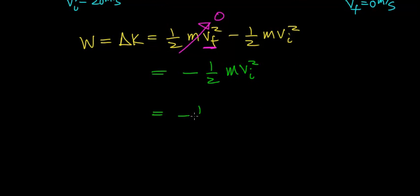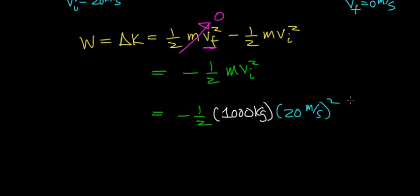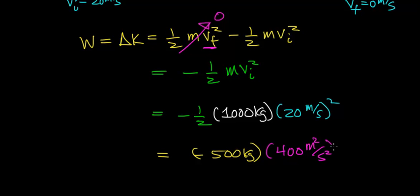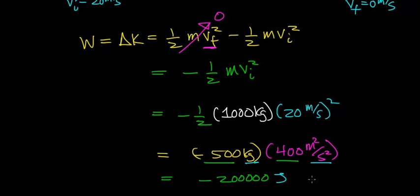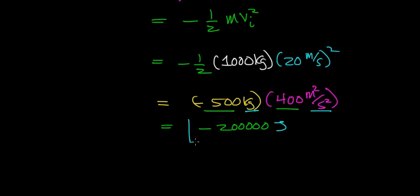Working this out: minus one-half times the mass of the car, which is 1,000 kilograms, times the initial velocity of 20 meters per second squared. Minus one-half of 1,000 kilograms is minus 500 kilograms, and 20 meters per second squared is 400 meters squared per second squared. Multiplying minus 500 by 400 gives minus 200,000 kilograms times meters squared per second squared, which is a unit of joules. So the energy required to bring this car to a stop is minus 200,000 joules.